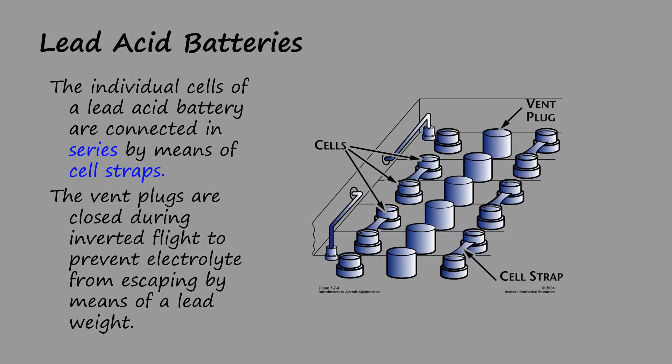The individual cells of a lead acid battery are connected in series by means of cell straps. The vent plugs have a lead weight inside each one that will seal the vent in the event that plane is inverted to prevent the highly corrosive electrolyte from leaking into the aircraft.